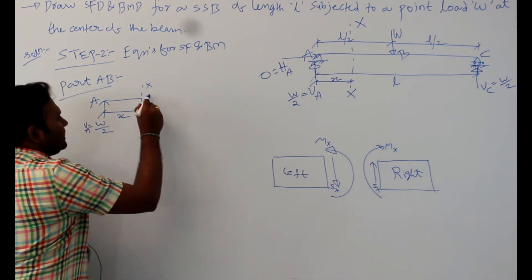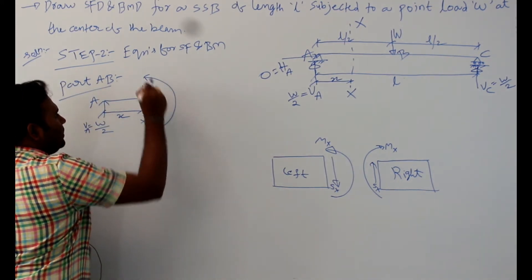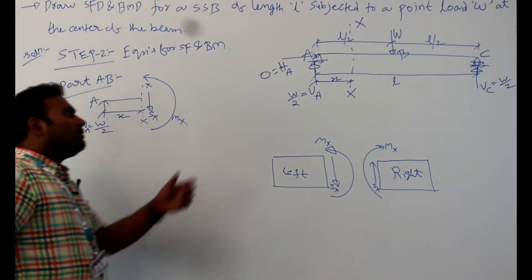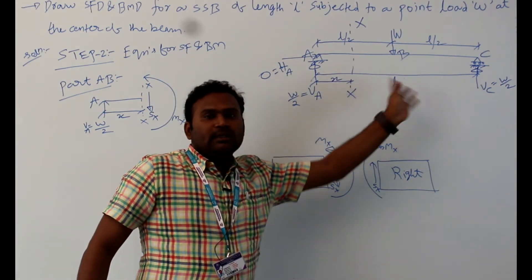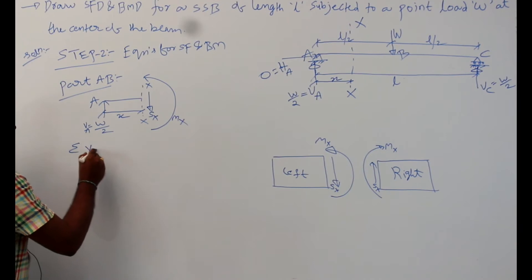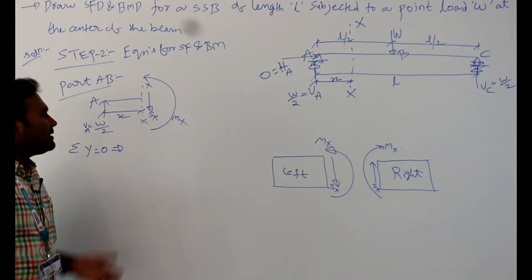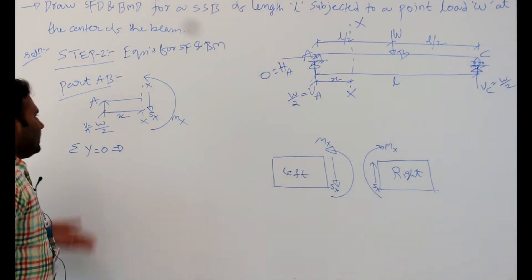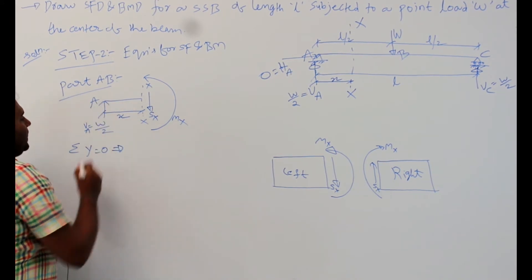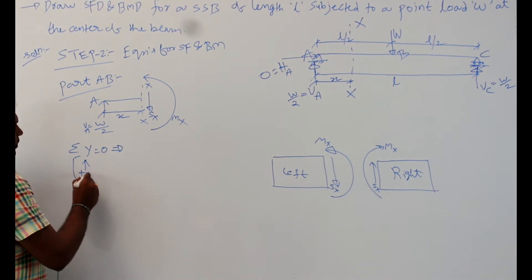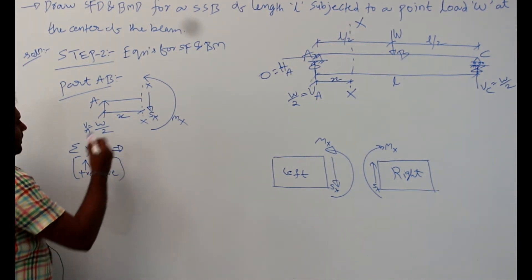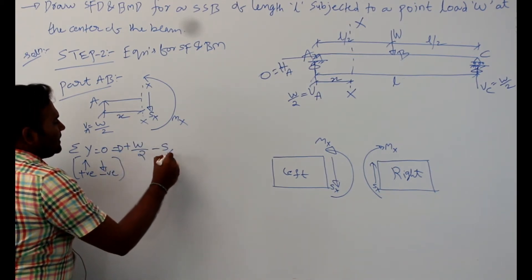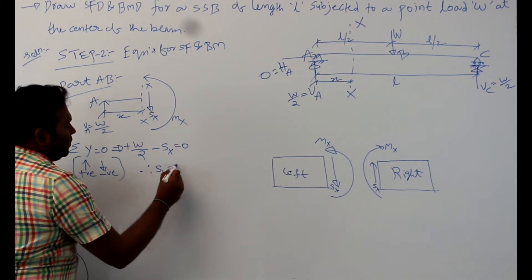Applying Sigma Y = 0 to the left portion of section XX: VA = W/2 acts upward (positive), and SX acts downward (negative). So W/2 − SX = 0, giving SX = W/2. This shear force value is constant throughout section AB, valid for 0 ≤ X ≤ L/2.